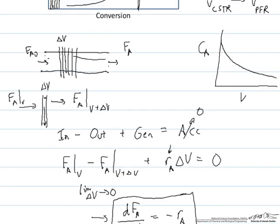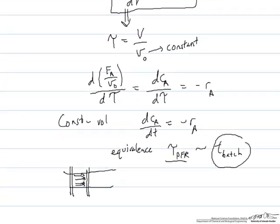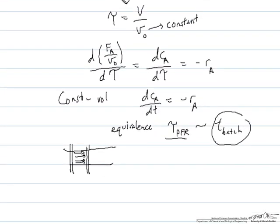And so in this way we see that a PFR can be considered as an infinite number of infinitesimal CSTRs in series, or as continuous flow of batch reactors that are flowing through a pipe.